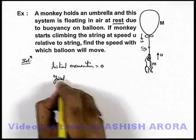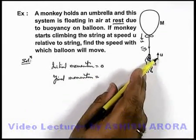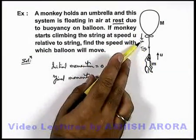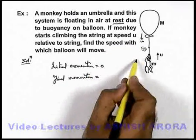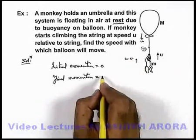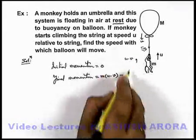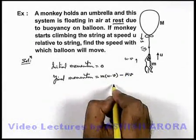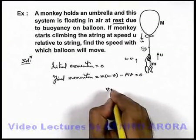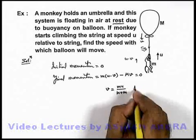The final momentum must also remain zero. If the monkey is climbing up at speed u and the balloon is coming down at speed v, the string will also come down along with the balloon, so the net speed of the monkey will become u minus v. The net momentum of the system can be written as: small m times (u minus v) for the monkey in the upward direction, minus capital M times v for the balloon in the downward direction, which must equal zero. Simplifying, we get v equals Mu divided by (M plus m). That is the answer to this problem.